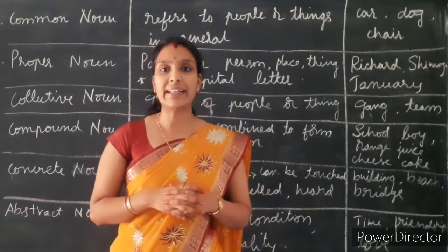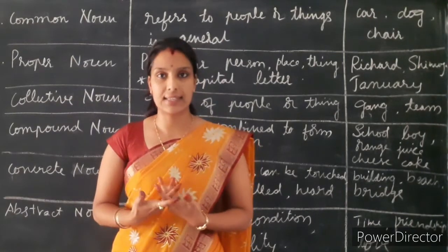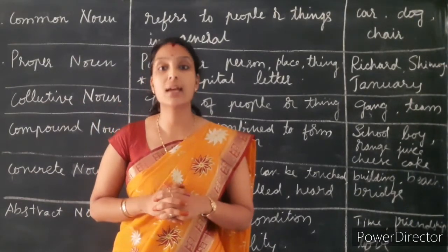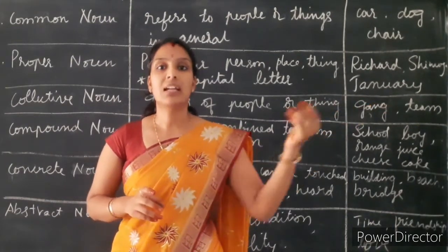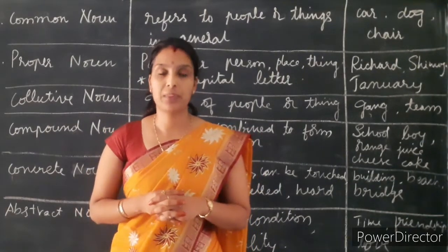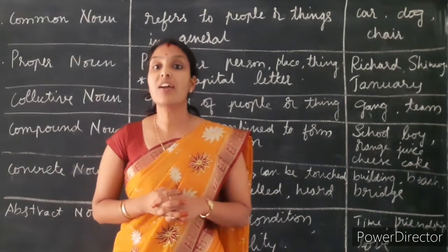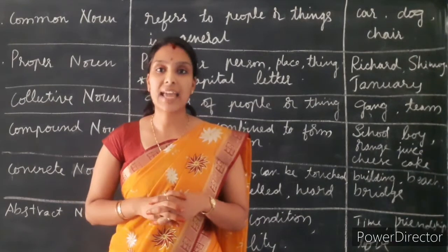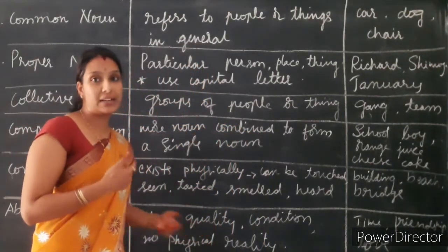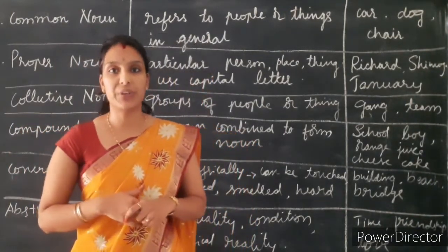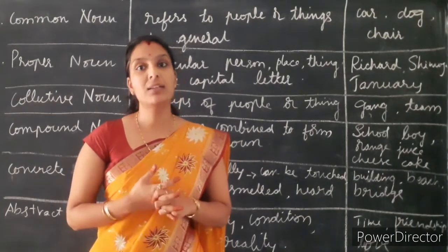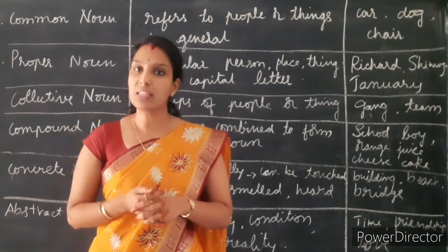Concrete nouns are those which have physical existence — which can be touched, sensed, heard, tasted or smelt. For example, bridge, Kakinada beach, building — these are called concrete noun. Abstract noun does not have any physical presence or physical reality — it can be just an idea, a feeling, a state, or a quality. For example, love, hatred, friendship — these cannot be seen but are just a feeling or an idea. So these are called abstract noun.